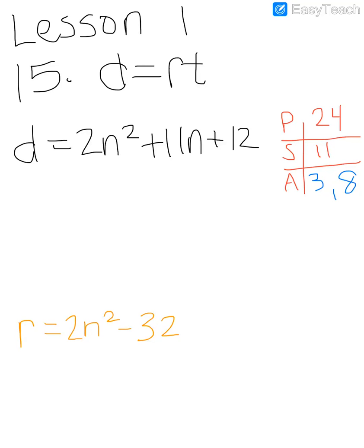This is homework question 15 from your note package lesson 1. The question says the distance can be determined using this formula here. D is equal to R times T, and it says that R is the rate of speed and T is time.